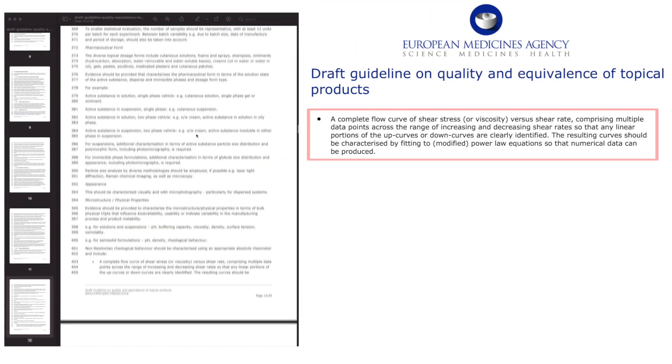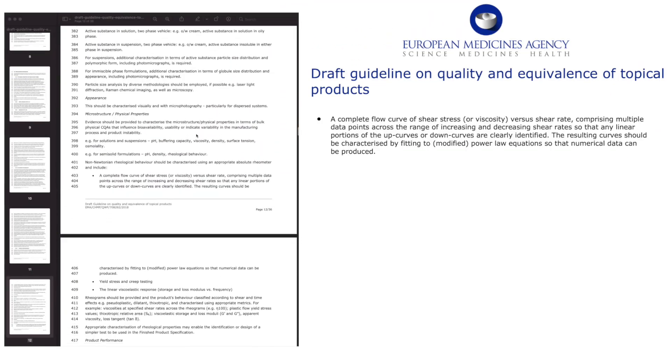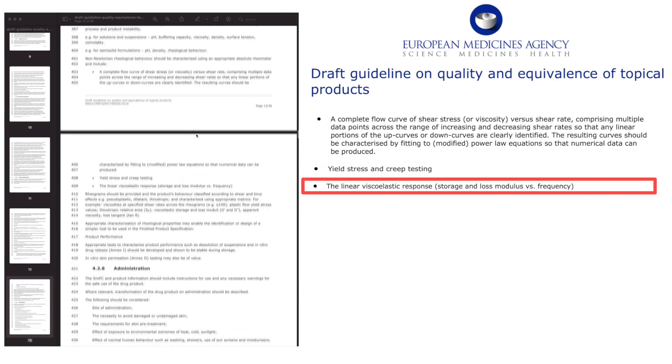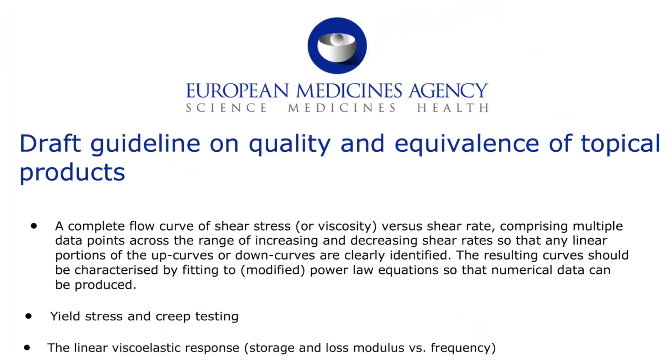Rheological data is so important that it is often included as a prerequisite to pass regulatory requirements. In this draft guidance from the EMA, specific metrics are requested, including viscosity across a range of shear rates, yield stress, and viscoelastic moduli.